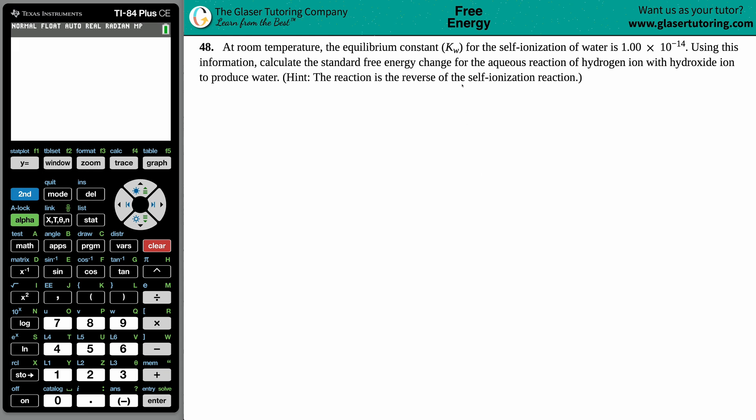Number 48. At room temperature, the equilibrium constant KW for the self-ionization of water is 1.00 times 10 to the negative 14th. Using this information, calculate the standard free energy change for the aqueous reaction of the hydrogen ion with hydroxide ion to produce water. And then hint, the reaction is the reverse of the self-ionization reaction.